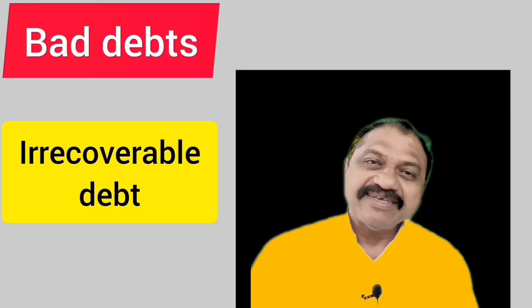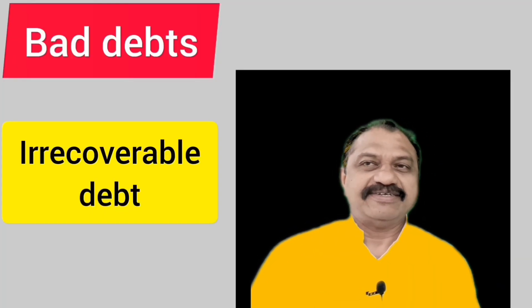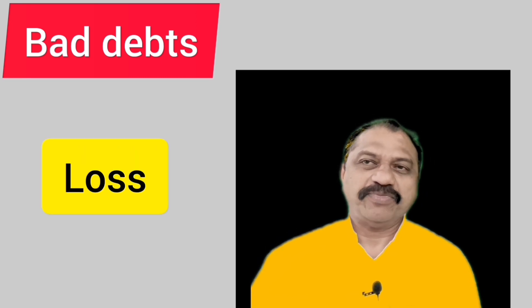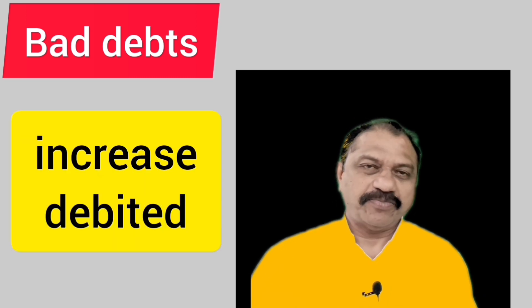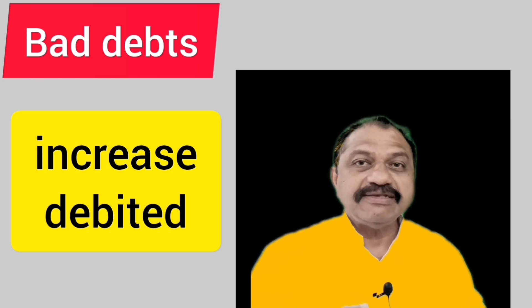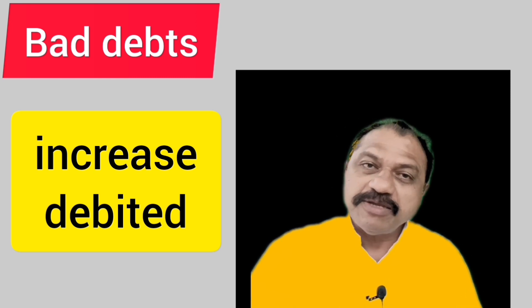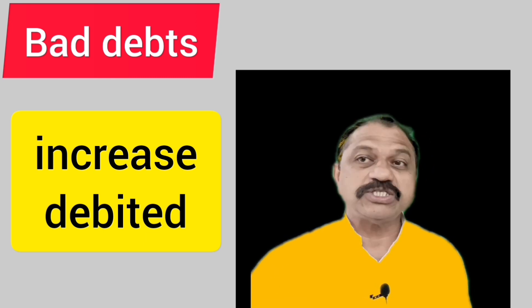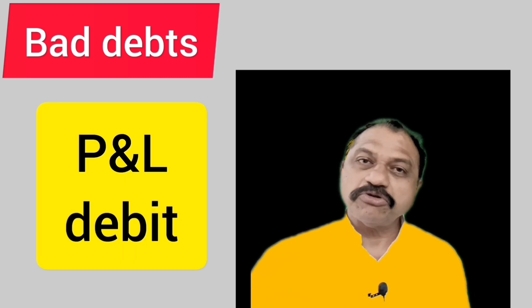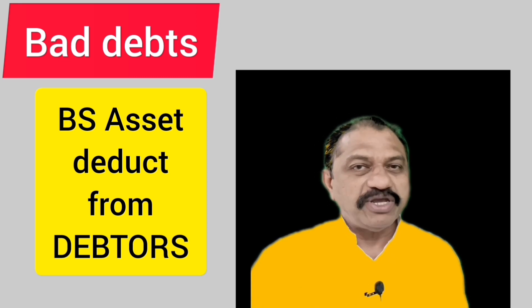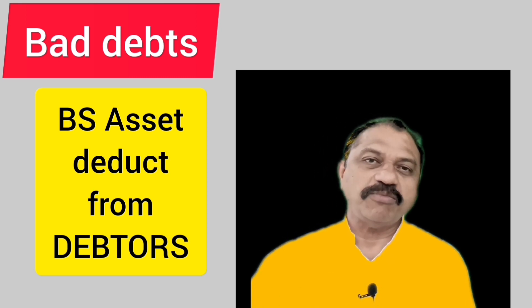Here ends our story. Bad debt means irrecoverable debt. The irrecoverable portion of debtors is named as bad debts. Bad debt is a loss to the business. As per the basic rule, expenses and losses increase is debited. Therefore, bad debt is debited in the books of accounts. The journal entry is: Bad Debts Account debit, to Sundry Debtors Account. Bad debts should be shown on the debit side of the Profit and Loss Account, and it should be deducted from sundry debtors on the asset side of the Balance Sheet.